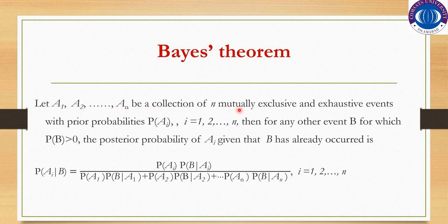Let A1, A2, ..., An be a collection of n mutually exclusive and exhaustive events with prior probabilities P(Ai), where i varies from 1 to n. Then for any other event B for which P(B) > 0, the posterior probability of Ai given that B has already occurred is: P(Ai|B) = P(Ai)·P(B|Ai) divided by P(A1)·P(B|A1) + P(A2)·P(B|A2) + ... + P(An)·P(B|An), where Ai varies from 1 to n.